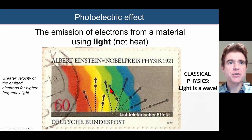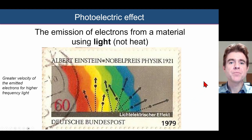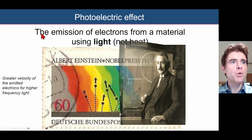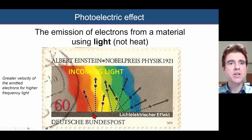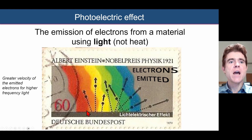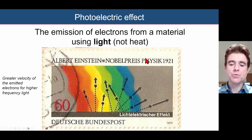On this commemorative stamp from 1979 — 100 years after Albert Einstein was born — we see various colours of light coming in, incident on a surface, and electrons being liberated from that surface. So that's the photoelectric effect.